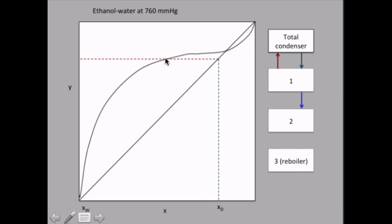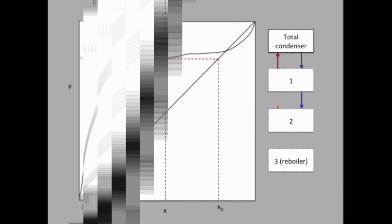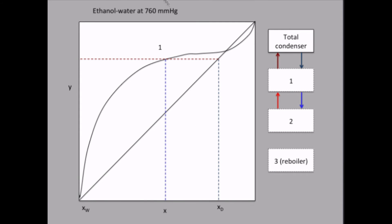and that's the point given by the system curve. So this is the composition. Now we have drawn our first triangle, our first equilibrium stage. So what is the composition of the vapor coming to stage 1?